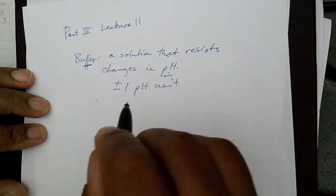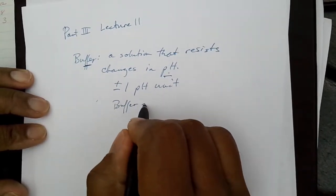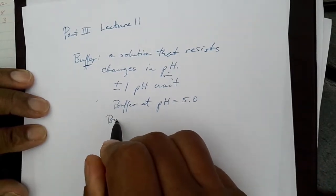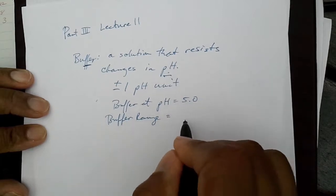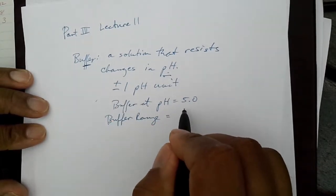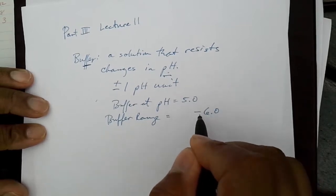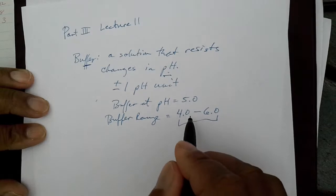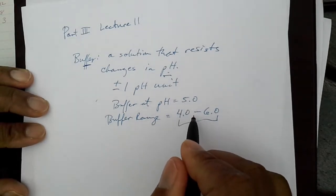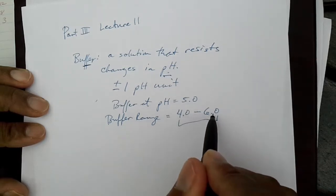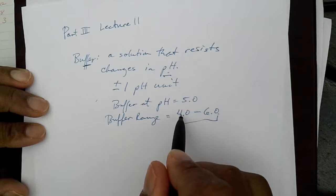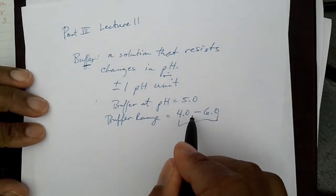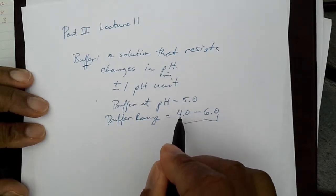And so that means that if I have a buffer at pH five, then the buffer range is plus one pH six to minus one pH. So that would be a pH of four. So that would be considered the range. So the buffer would be optimum at pH five, of course in the middle. And at these extended ranges, this is the area that will act as a buffer. In other words, it will help, it will continue to resist the change in pH, dramatic changes in pH between four and six.